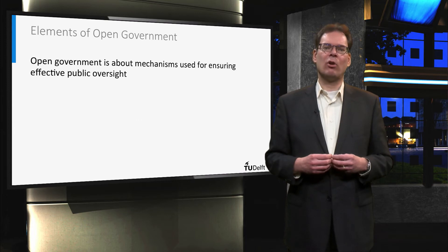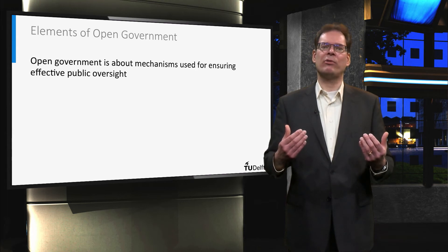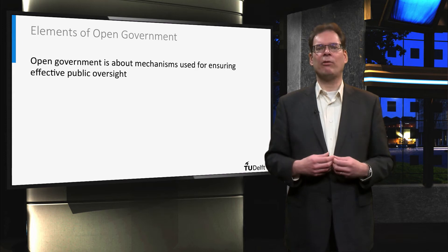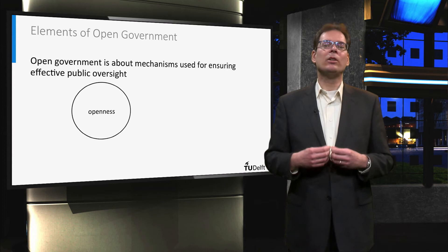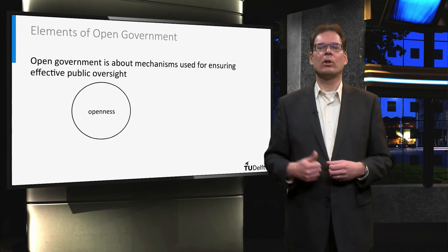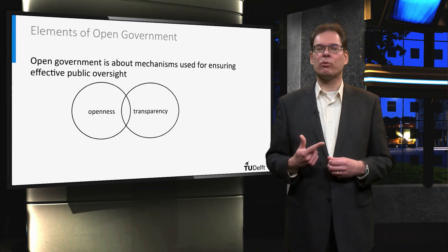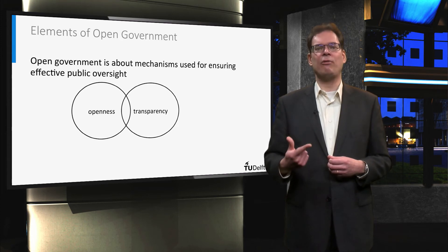Why do we consider open government as important? If open and accountable governance is considered as the very foundation of our democracy, then mechanisms for ensuring effective public oversight are paramount. This requires openness, or the opening of government. Transparency should allow citizens in a democracy to control their government, reducing fraud and corruption, but also ensuring its efficient and effective functioning.